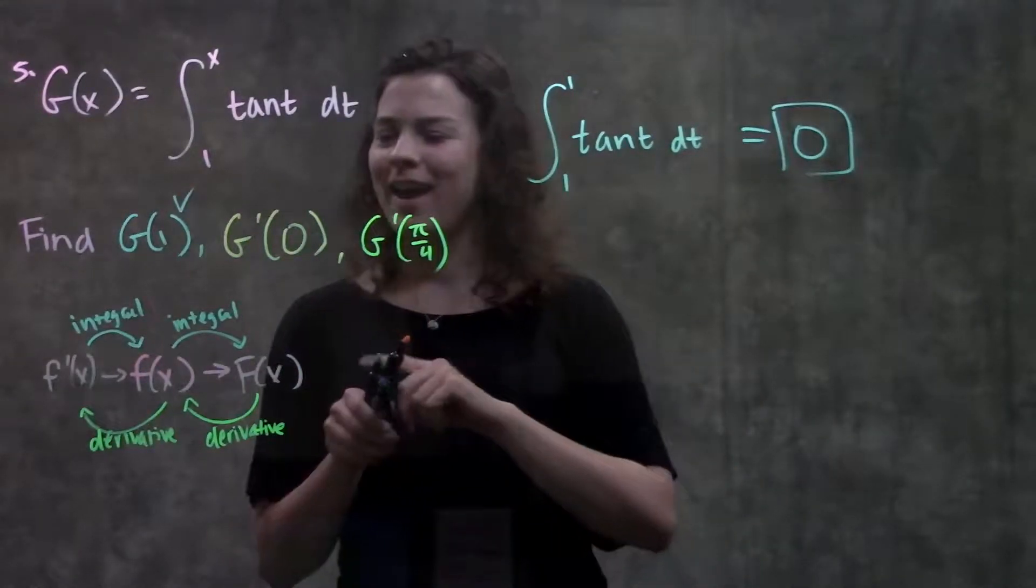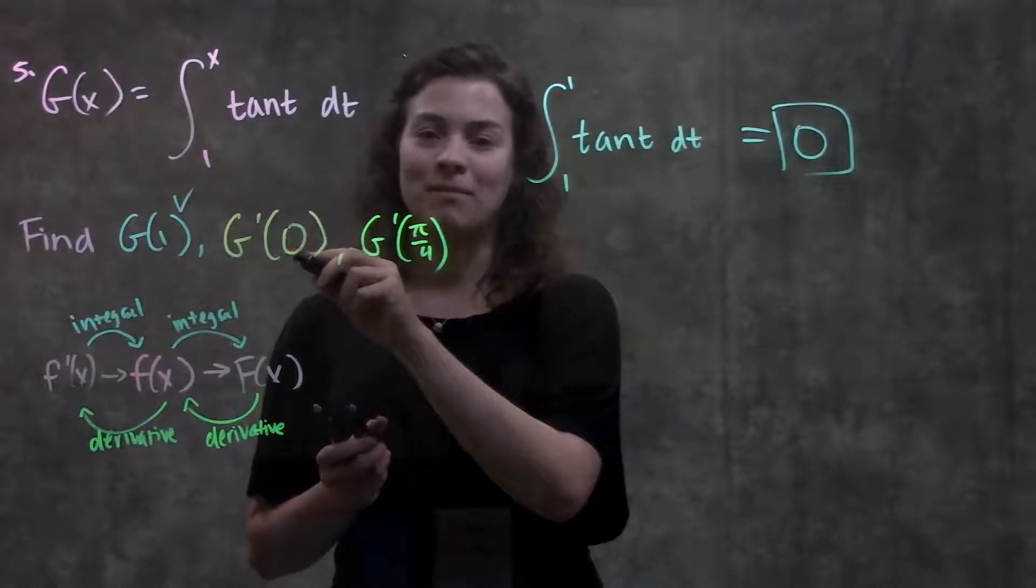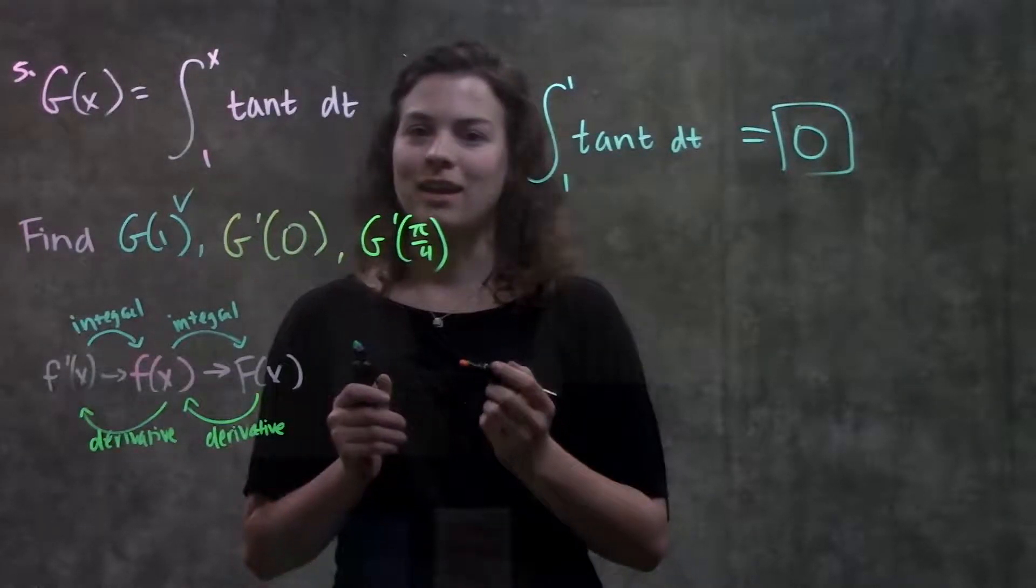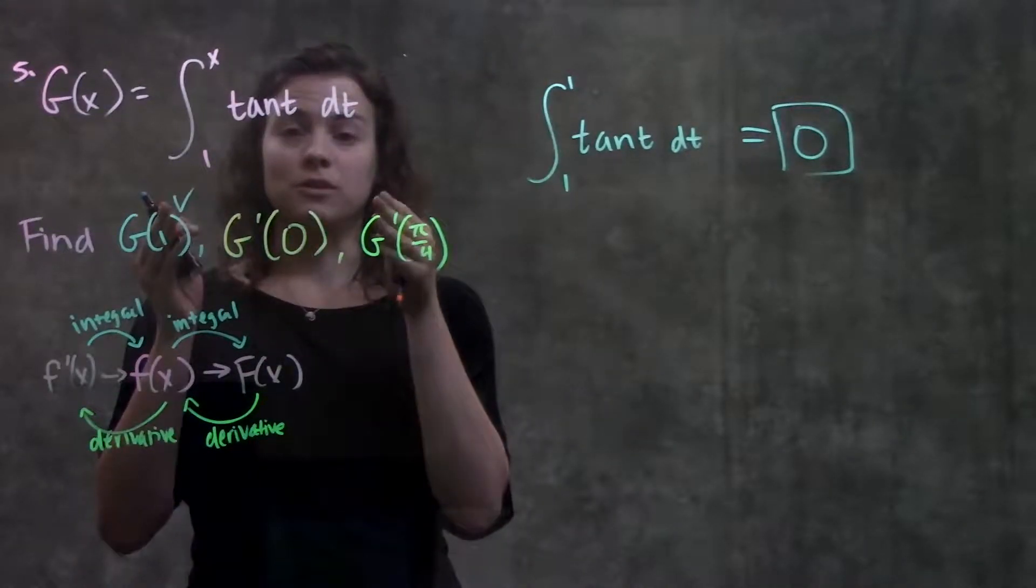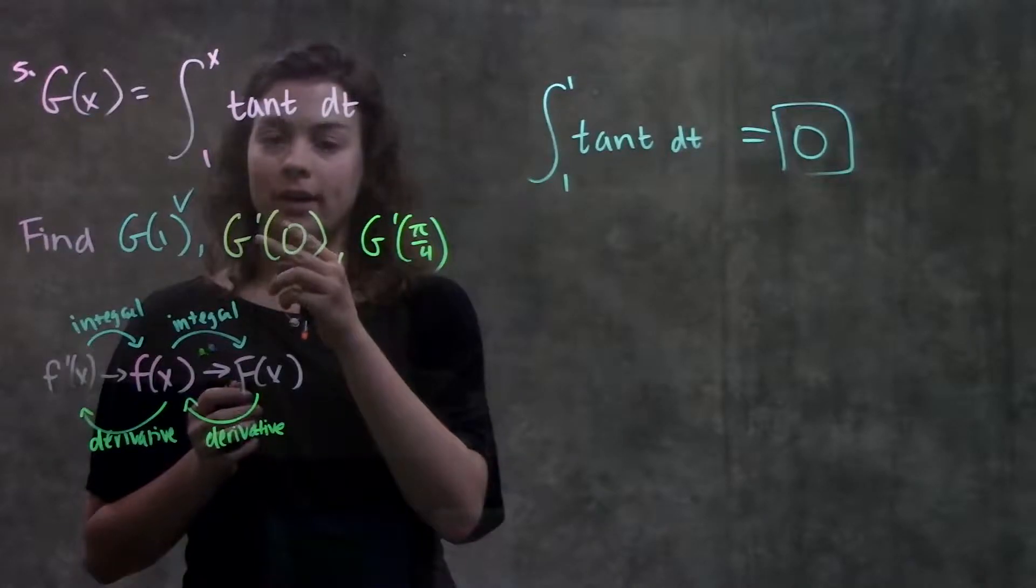Done with that part. Next part is asking us for g prime of 0. Remember, the capital G here is representing our integral. And when we take the derivative of our integral,